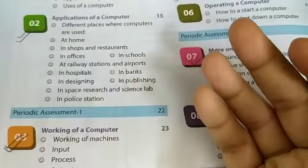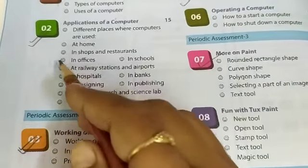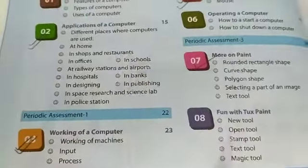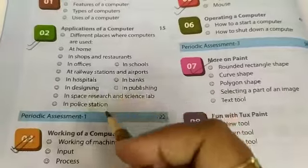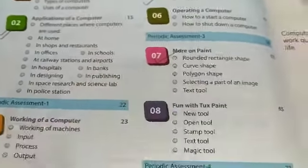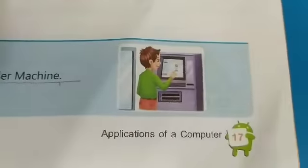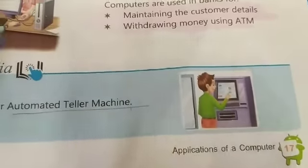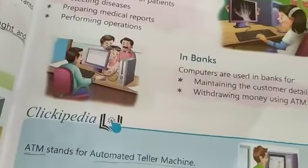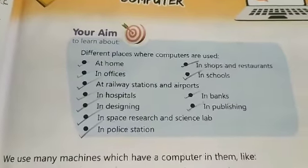Kis field mein uska upyog hai? In that, we covered different places — at home, in shops, in office, in school. These points we had covered. So today we are going to complete our remaining portion of this chapter. Take out your book and come to page number 17. But before starting today's class, we are going to revise our previous portion of this chapter. So let's recall these points firstly.